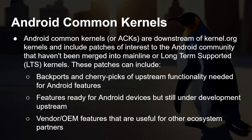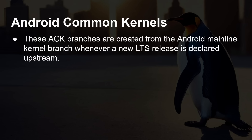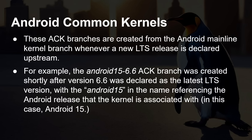Normally these Android Common Kernel branches are created from the mainline kernel branch when a new LTS release is declared upstream. For example, Android 15-6.6 was created shortly after version 6.6 was declared from the LTS stream of the Linux kernel. The Android 15 references the Android release that kernel is associated with — in this case Android 15.